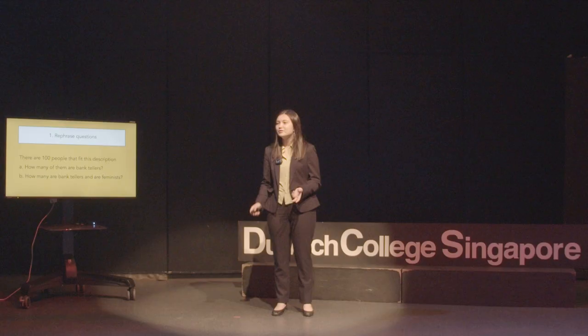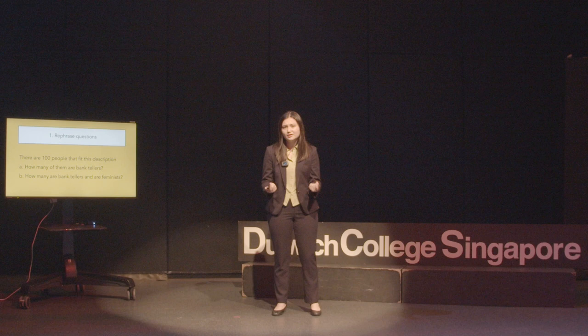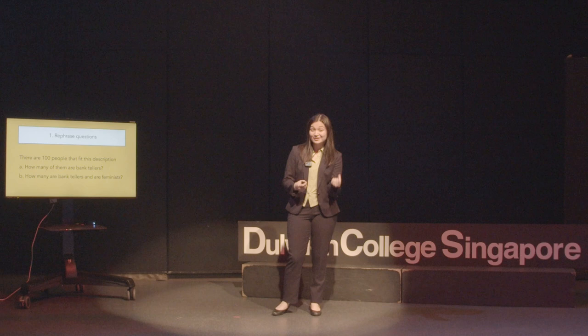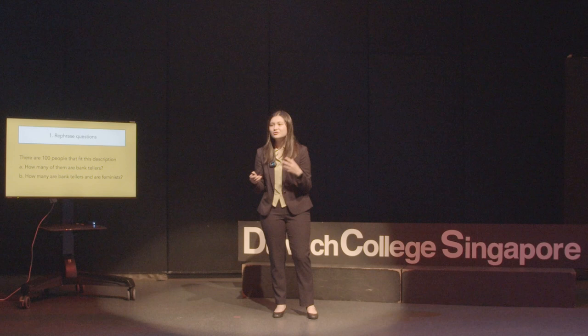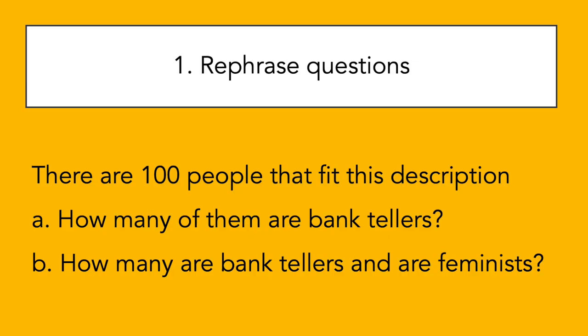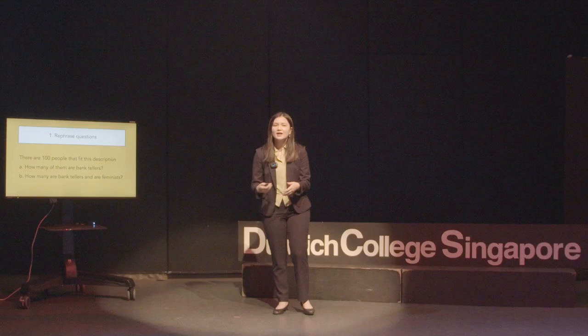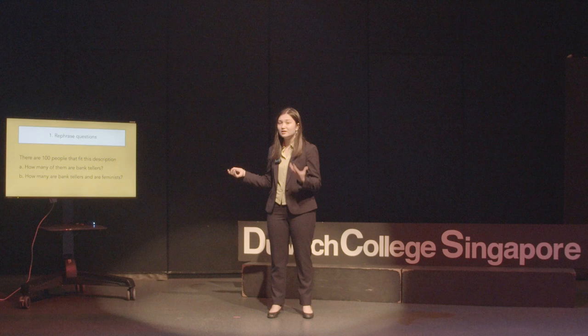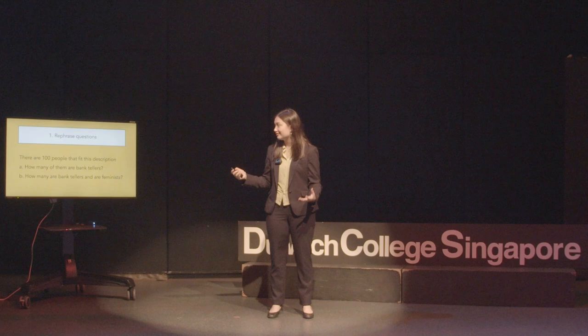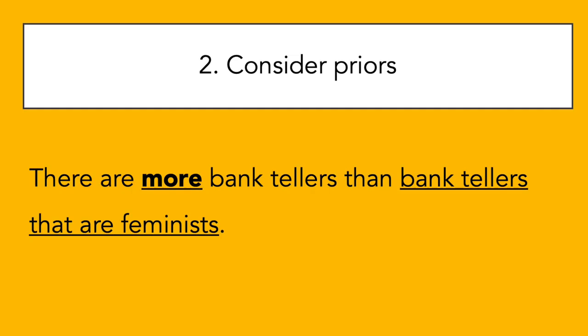Rephrasing your question is really important. The question about the likelihood of Linda being a feminist bank teller is actually slightly engineered for you to answer wrongly, because I gave you an abstract term — 'more likely or less likely' — which is something the human brain can't really handle well. What's better is to say: if there are 100 people that fit this description, how many are bank tellers, and how many are bank tellers and feminists? When psychologists conducted this investigation rephrased this way, a huge proportion of people gave the correct answer: there are more bank tellers than bank tellers who are also feminists.